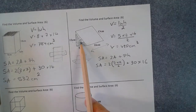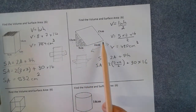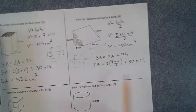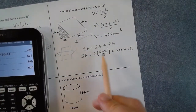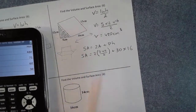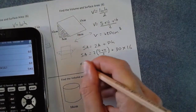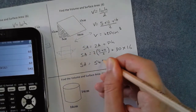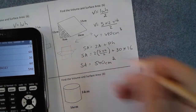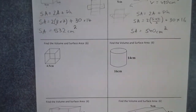So A is the face area — the same on the front and back — and the little h is the distance between them. Typing this in: 5 times 12 is 60, divided by 2 is 30, multiplied by 2 gives 60, plus 30 times 16. The surface area is 540 squared centimeters.